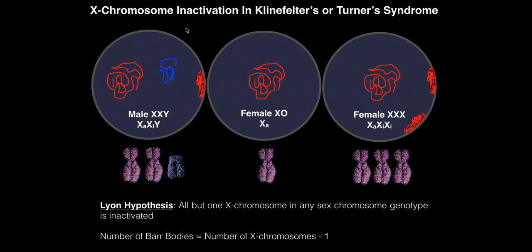Consider Klinefelter syndrome, with genotype XXY. This male has an extra X chromosome. One X chromosome is activated, the Y chromosome is present, and the other X chromosome is inactivated into a bar body pushed to the wall of the nucleus. The notation is X-sub-a, X-sub-i, Y. They have one bar body, because two X chromosomes minus one equals one.